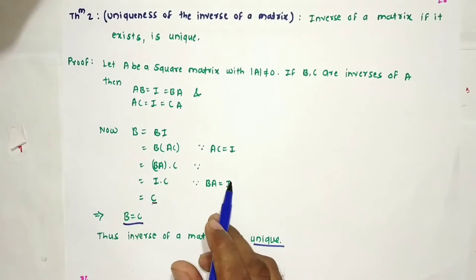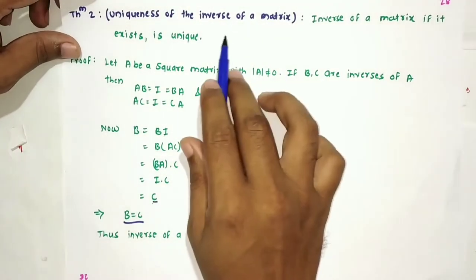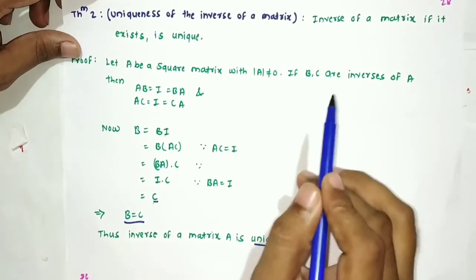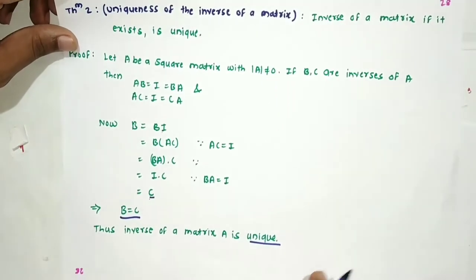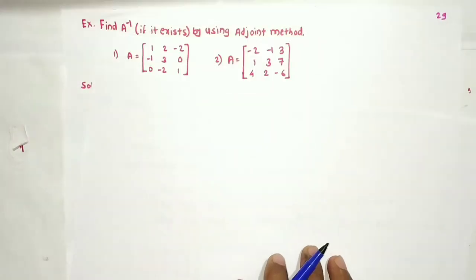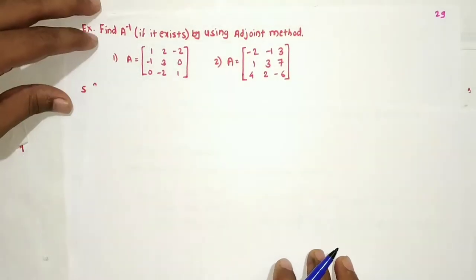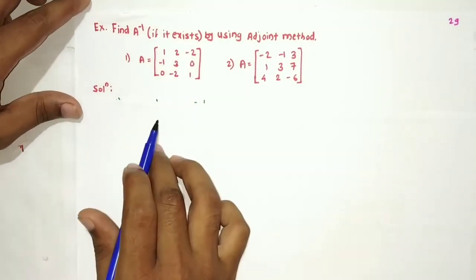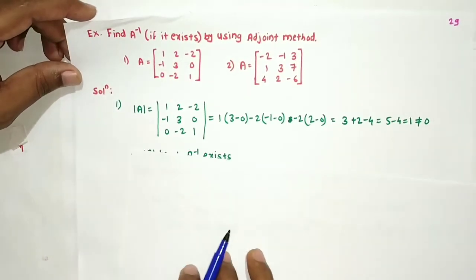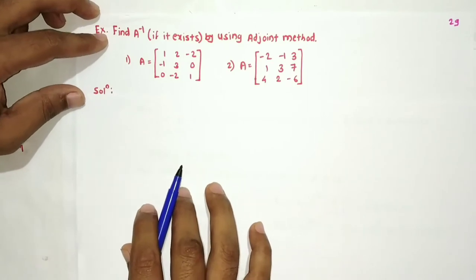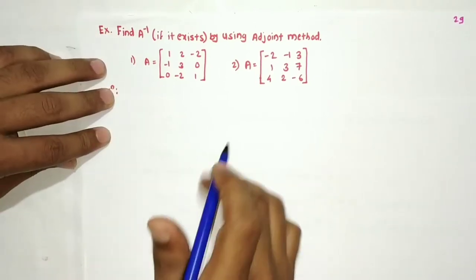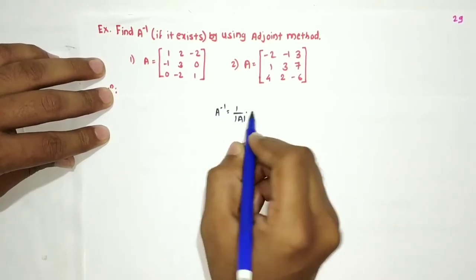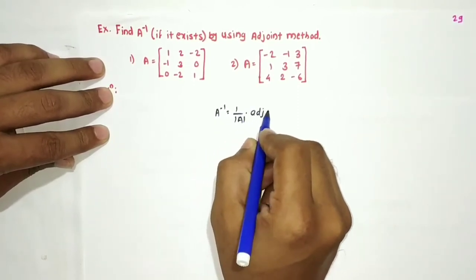The last theorem was the uniqueness of the inverse of a matrix. In this chapter, we are going to discuss some examples on finding A inverse by using the adjoint method, where A inverse equals 1 upon determinant of A into adjoint of A.